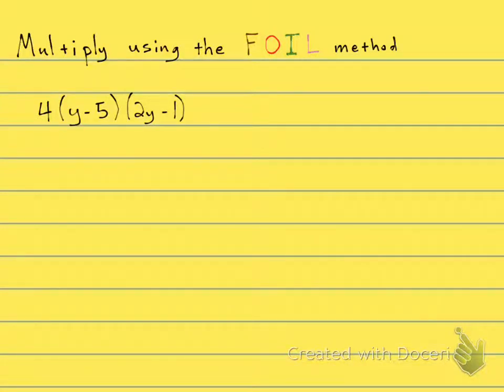Multiply using the FOIL method. You see here that we have these two binomials, which you probably know how to FOIL, but now there's this number 4 out here in front.